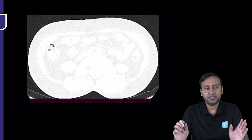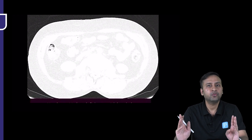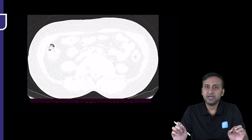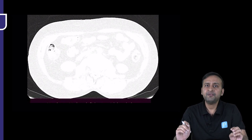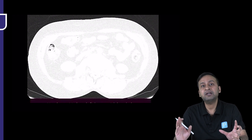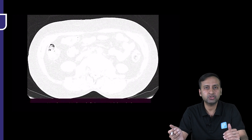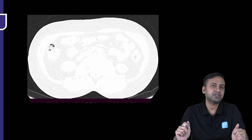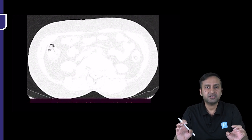Before I go ahead and discuss the intricate details and system of reporting, I want to highlight three key points. Whenever you see a case that looks like an interstitial lung disease, you have to answer three questions: first, are we dealing with an interstitial or diffuse lung disease? Second, if yes, what is the predominant pattern — reticular, nodular, ground glass opacification, or focal air trapping? Third, are we dealing with a fibrosing ILD or a non-fibrosing ILD?